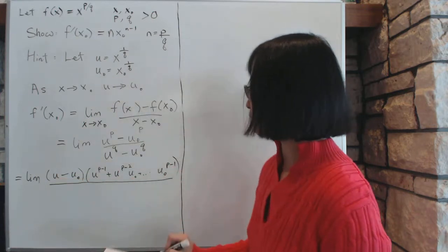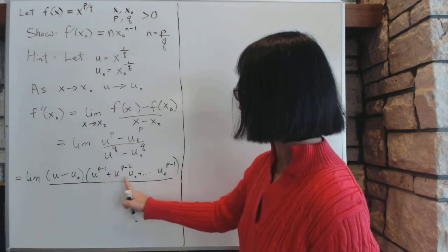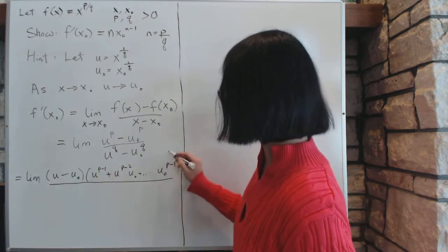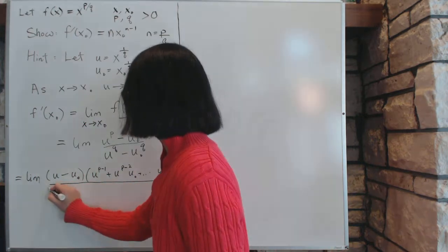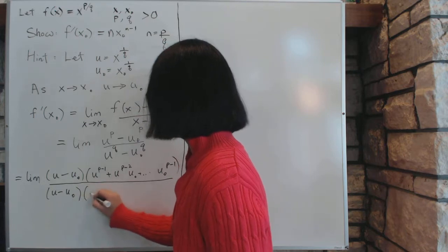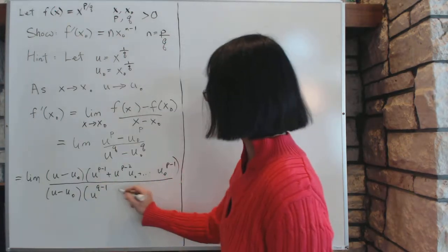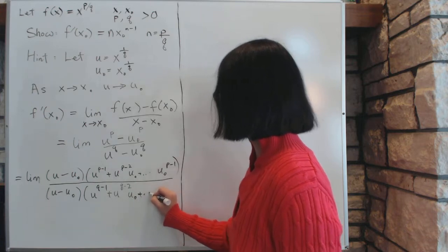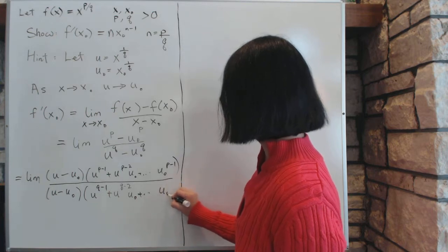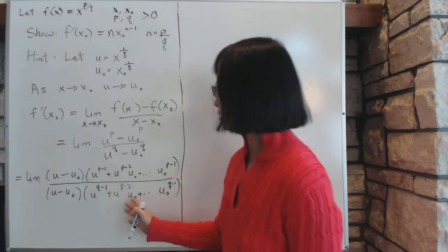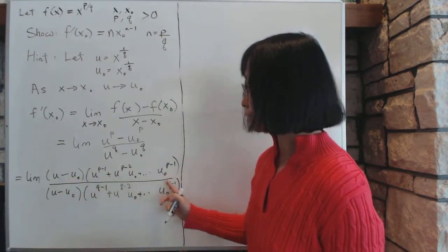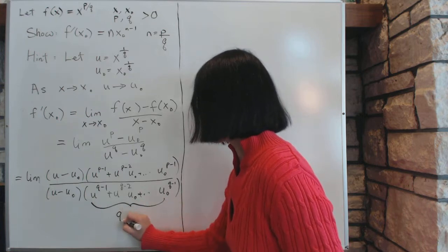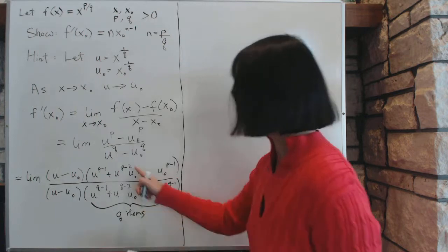And the same way with the bottom, except the bottom has q. And how many terms are in here? If you count it carefully and look at how it goes, it goes from zero to the power one to p minus one, and there's one more, so together there are p items on top. Now the same way on the bottom, you have u minus u0, and then u^(q-1) plus u^(q-2)u0, and you keep going all the way down to u0^(q-1). Now this formula is a standard formula in elementary calculus. If you don't remember it, you can multiply this out. Anyway, again, there are q items on the bottom and p items on top.